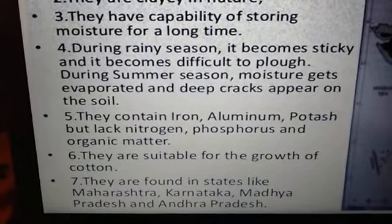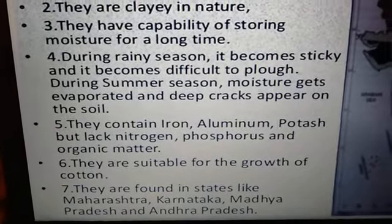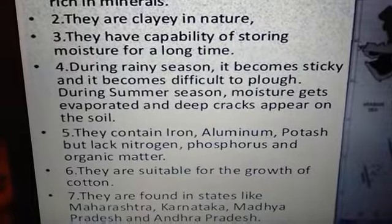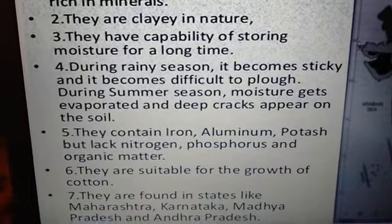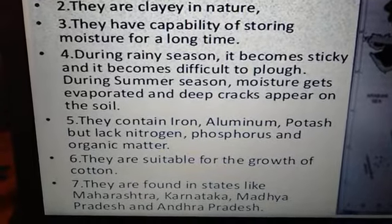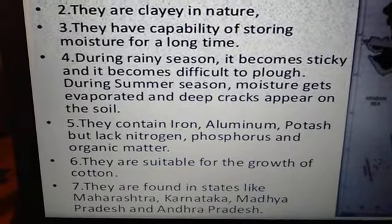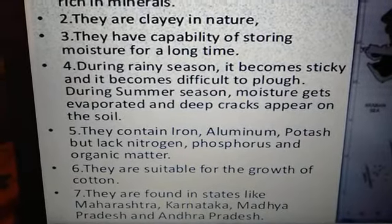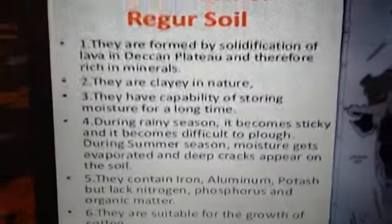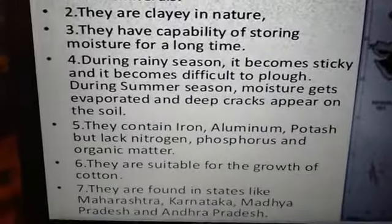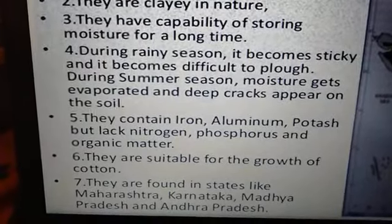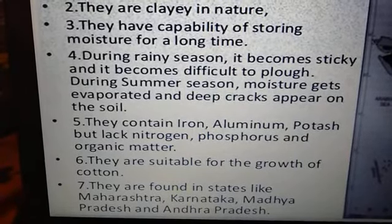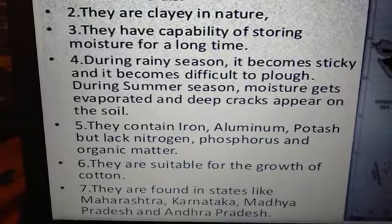Black soil contains iron, aluminum, and potassium, but lacks nitrogen, phosphorus, and organic matter. It is most suitable for the growth of cotton. It is found in states like Maharashtra, Karnataka, Madhya Pradesh, and Andhra Pradesh.